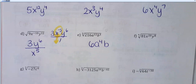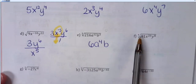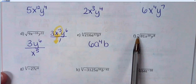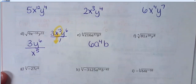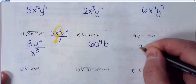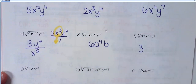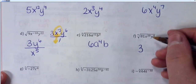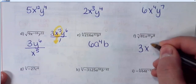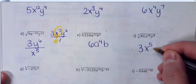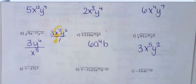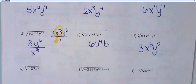81 can be tricky — make sure you're looking at what root you're using. This is a fourth root, so what to the fourth power is 81? That's going to be 3. For your exponents here, 20 divided by 4 is 5, and 8 divided by 4 is 2. I'm really just trying to get you guys familiar with these numbers.